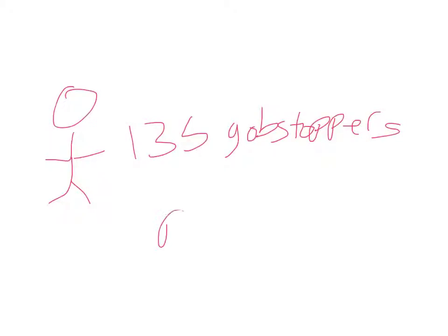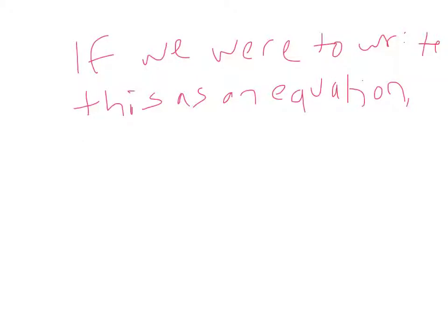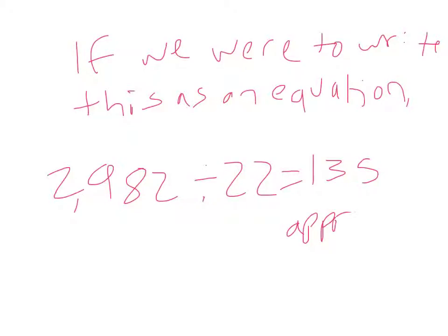In other words, each kid would get 135 gobstoppers approximately because of the remainder 12. If we were to write this as an equation, it would look like this: 2,982 divided by 22 equals 135 approximately, because there is also the remainder 12.